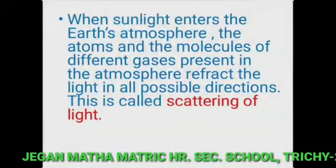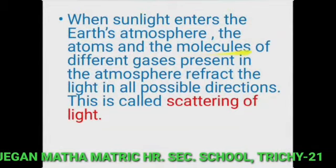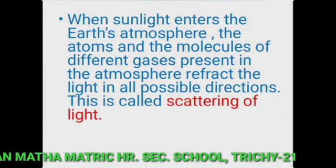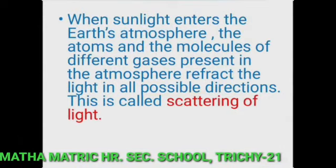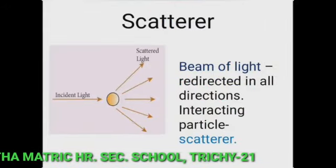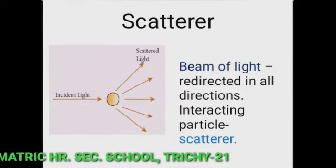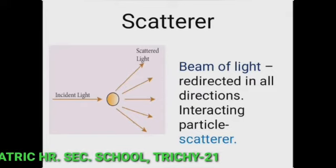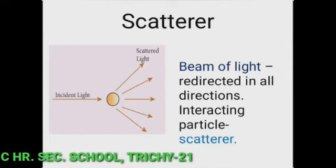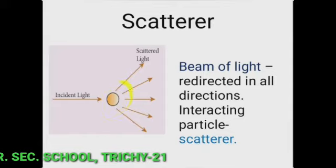When sunlight enters the earth's atmosphere, the atoms and molecules of different gases present in the atmosphere refract the light in all possible directions. This is called scattering of light. In this phenomenon, the beam of light is redirected in all directions when it interacts with a particle of the medium. The interacting particle of the medium is called a scatterer.